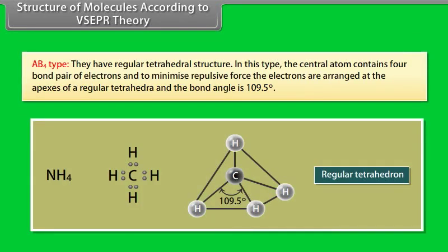AB4 type has a regular tetrahedral structure. The central atom contains four bond pairs of electrons and to minimize repulsive force, the electrons are arranged at the apexes of a regular tetrahedron with a bond angle of 109.5 degrees.